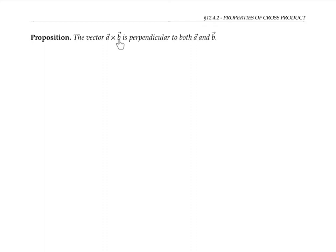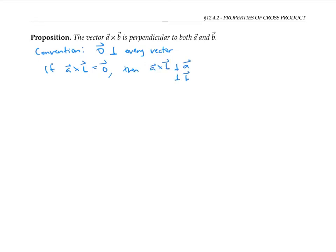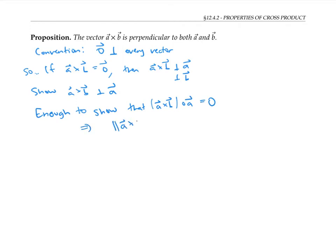Next, let's prove that the vector A cross B is perpendicular to both A and B. We're going to use the convention that the zero vector is perpendicular to every other vector. So that way, if A cross B happens to be the zero vector, then A cross B will be perpendicular to A and perpendicular to B automatically. So now let's show that A cross B is perpendicular to A in other cases — it's going to be enough to look at the dot product. Because if we can show that A cross B dotted with A is equal to zero, then we'll know that the length of A cross B times the length of A times cosine θ is zero, where θ is the angle between A and B, which follows from the formula for dot product in terms of lengths and angle.